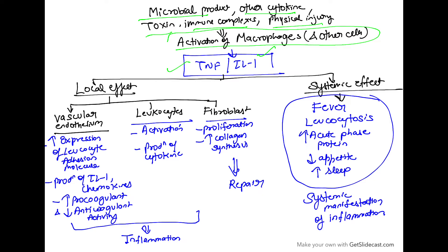These cytokines can have systemic effects such as fever, leukocytosis, increased acute phase reactants, decreased appetite, and increased sleep — these are the systemic manifestations of inflammation. They can also have local effects on vascular endothelium, leukocytes, and fibroblasts. On the endothelium, they increase the expression of leukocyte adhesion molecules.